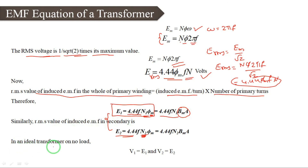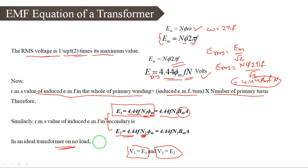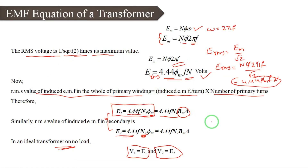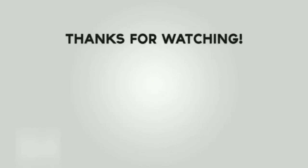For an ideal transformer on no load: V1 = E1 and V2 = E2, because for an ideal transformer there are no losses. V1 is the applied voltage, E1 is the induced EMF in the primary, E2 is the induced EMF in the secondary, and V2 is the load voltage. If there are no losses between V1 and E1, then V1 = E1 and V2 = E2. I hope you can understand this concept. Thank you very much.